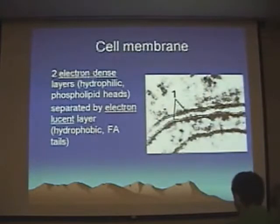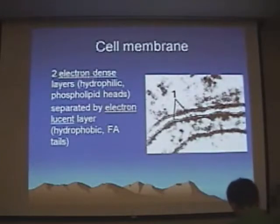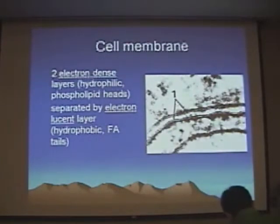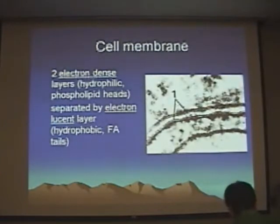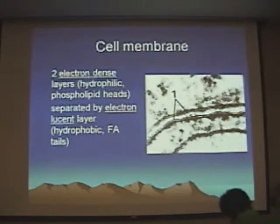Where do we start with the cell? Well, we start on the outside of the cell, looking at the cell membrane. Remember, the cell membrane is a lipid bilayer, and it's composed of these long molecules which have heads and tails. The heads of these molecules are phospholipid and tend to be hydrophilic, whereas the tails are hydrophobic because they're composed of fatty acids.